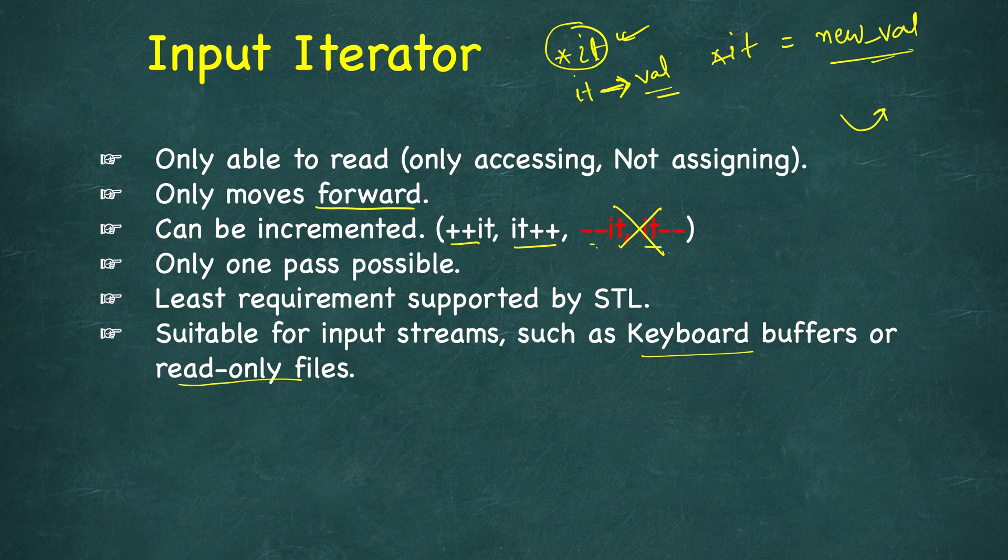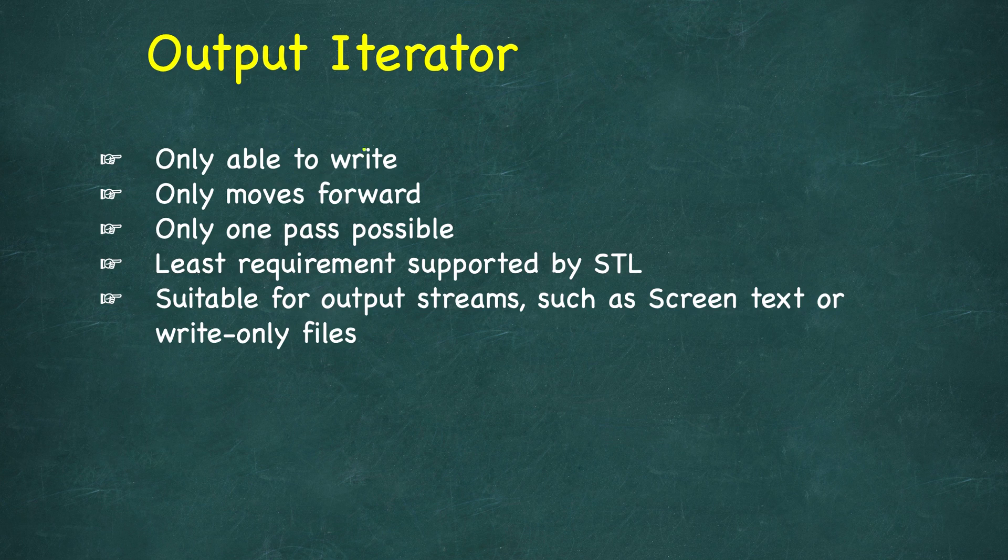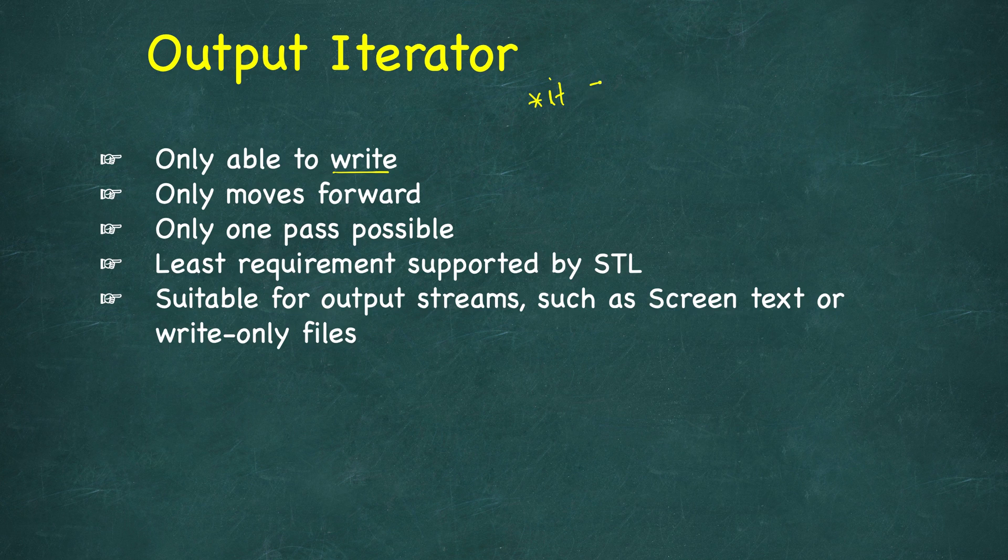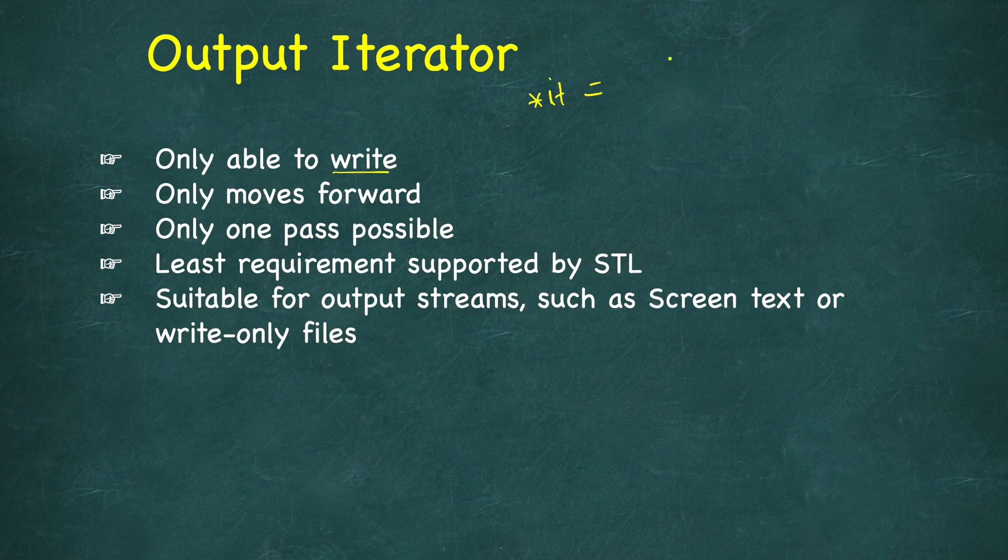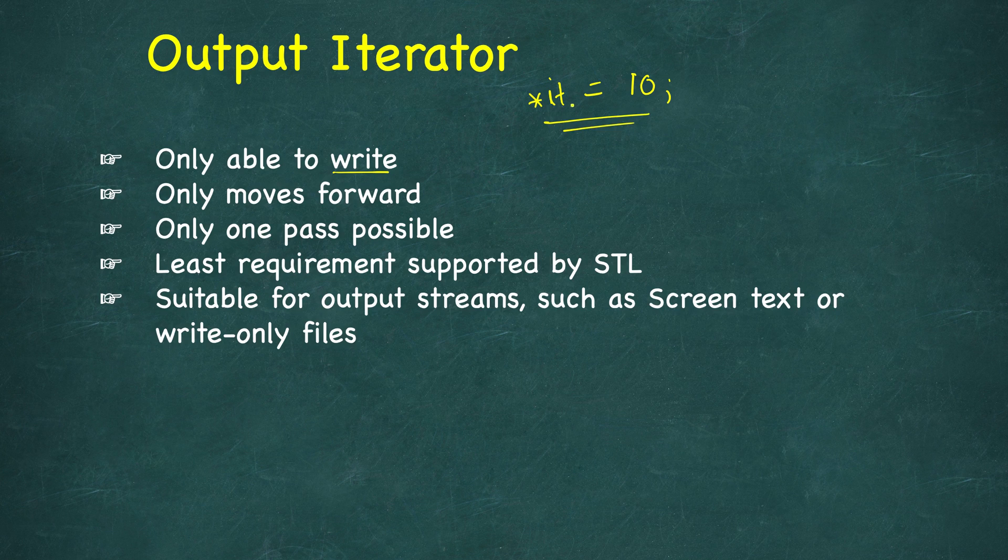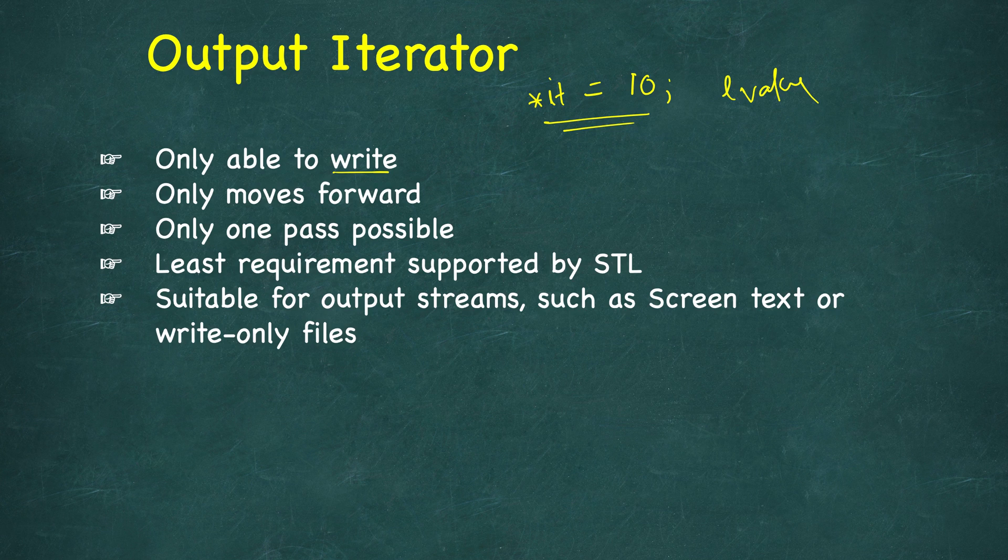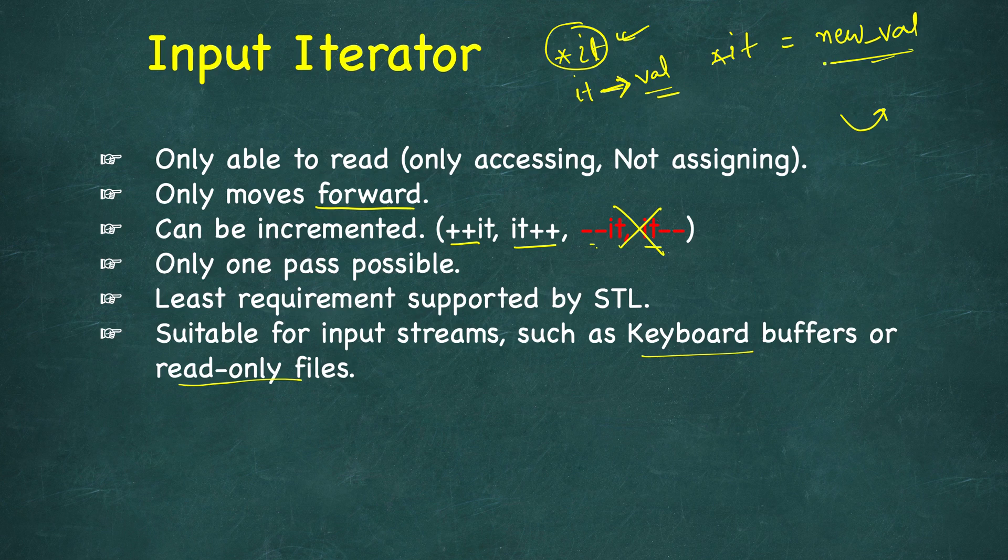Very similar but complementary to input iterator is output iterator. This is able to write but not read. Here if you access it like star it equals, let's say this was some integer value container, we can assign a value like 10. This is fine. When we dereference it, it will be dereferenced as an L-value, whereas in the case of input iterator it was an R-value when we dereferenced it. That's why it was not allowed to assign a new value.